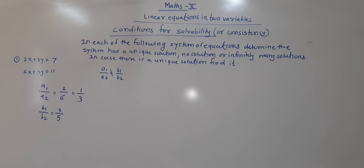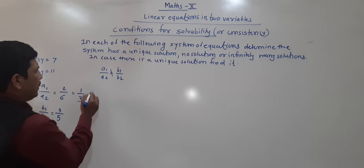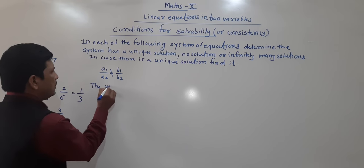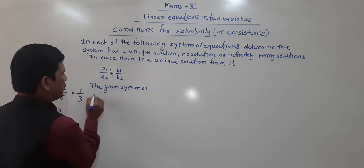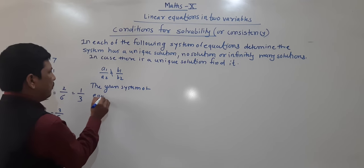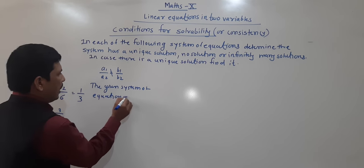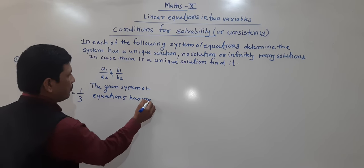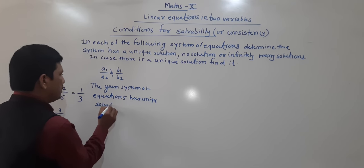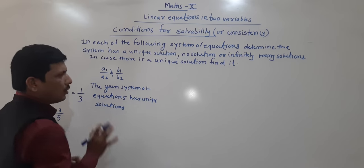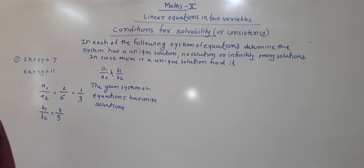According to the ratios, a1/a2 = 2/6 = 1/3. And b1/b2 = 3/5. Since a1/a2 is not equal to b1/b2 — 1/3 ≠ 3/5 — we can say the given system of equations has a unique solution, because the first two ratios are not equal.